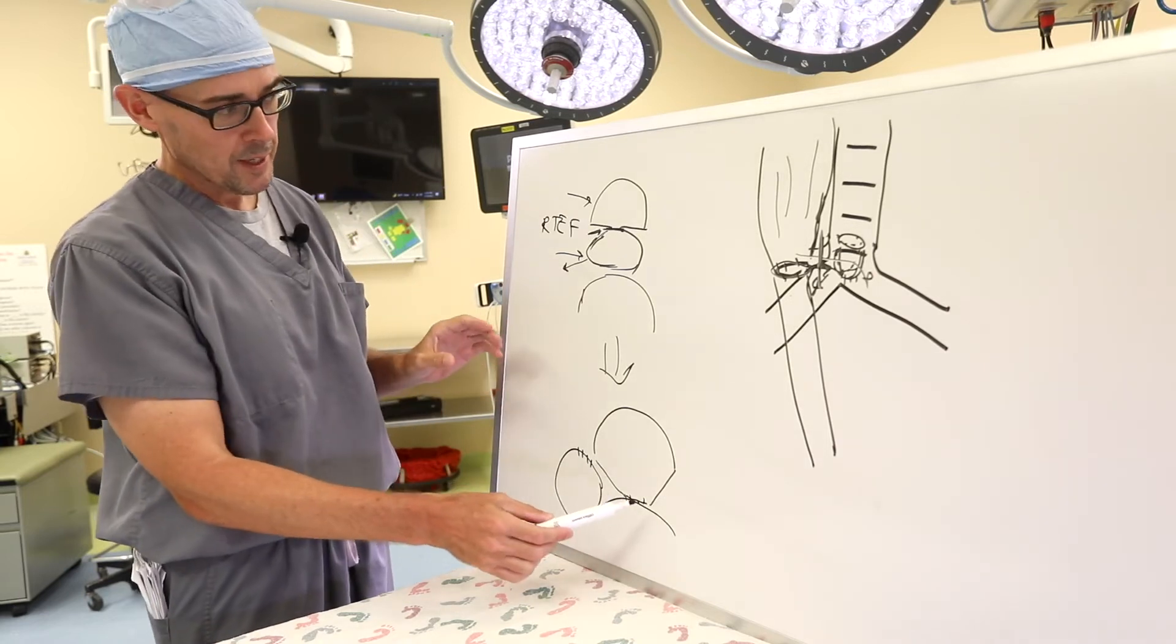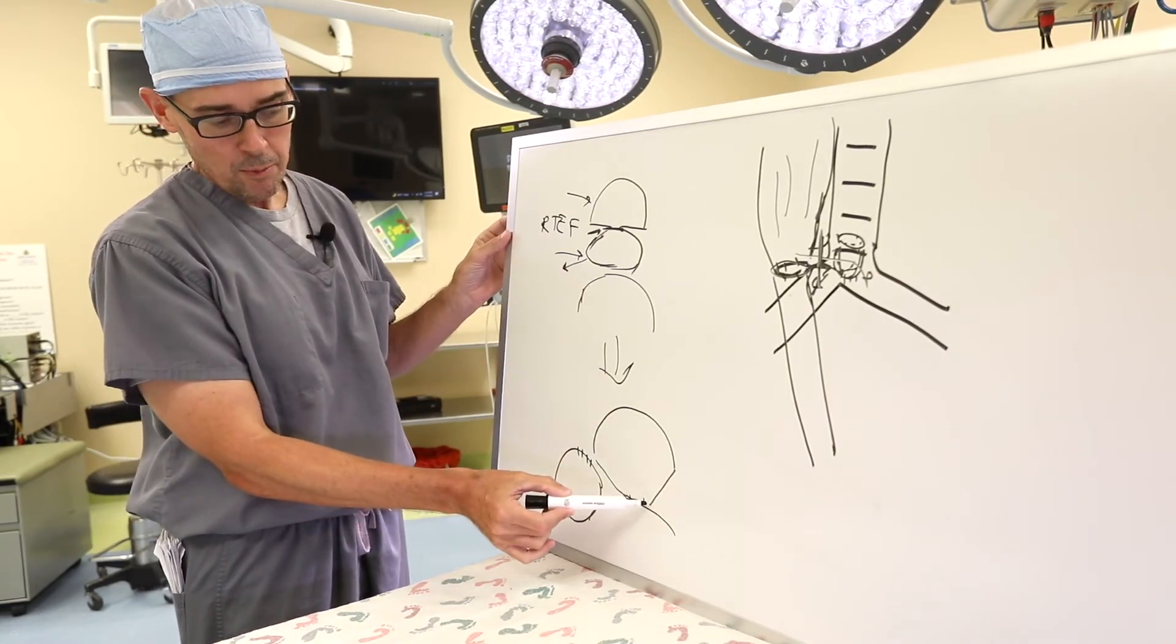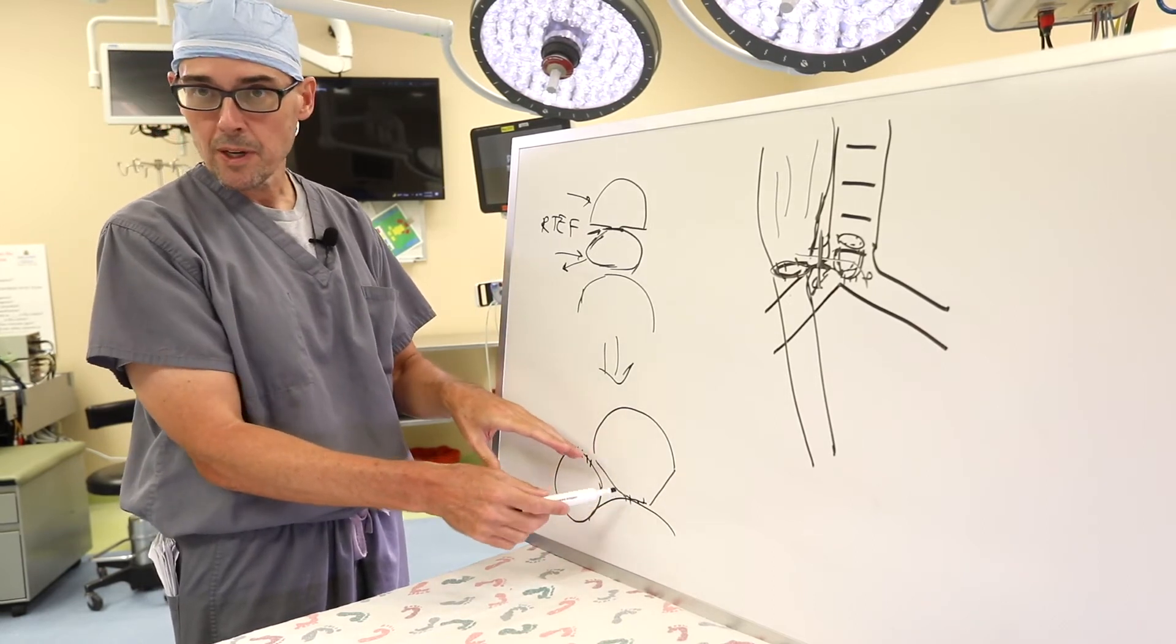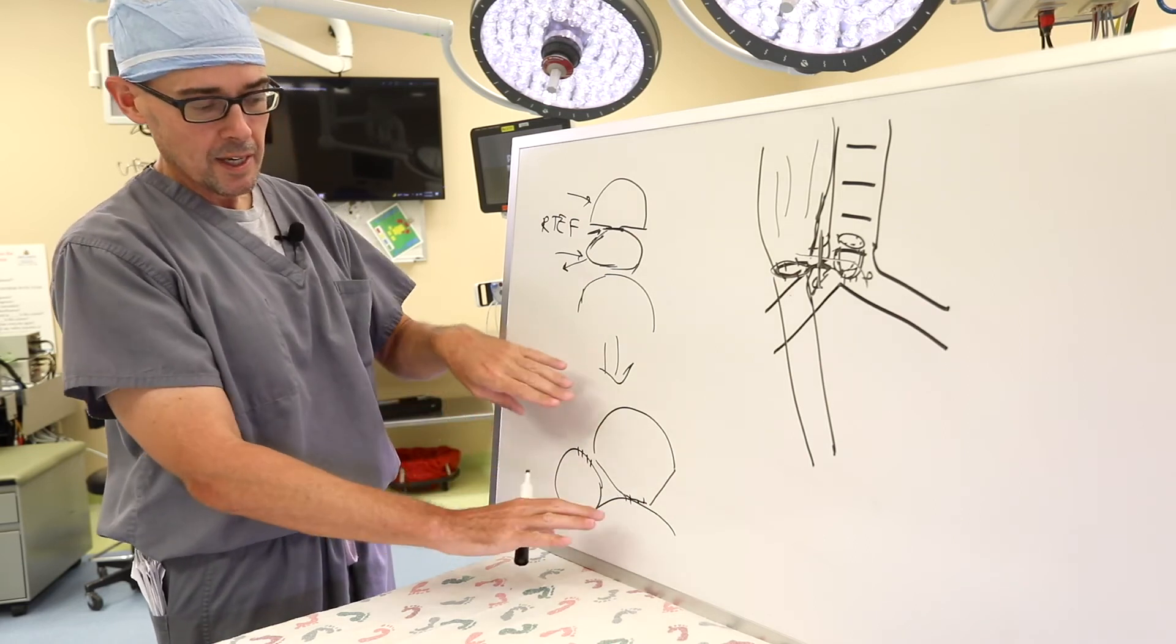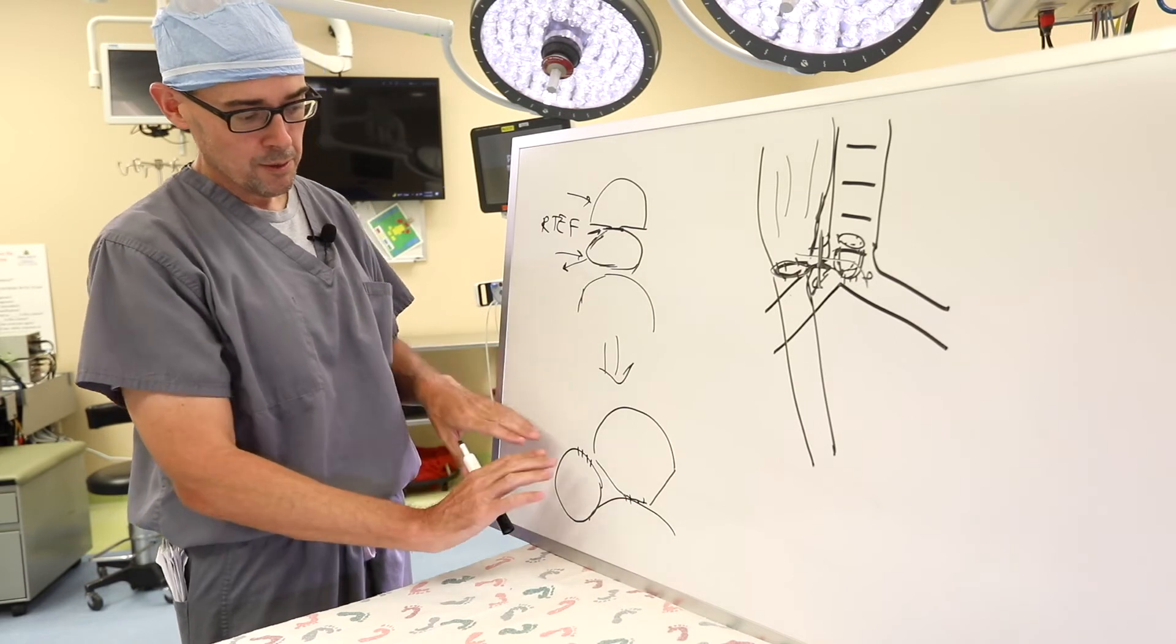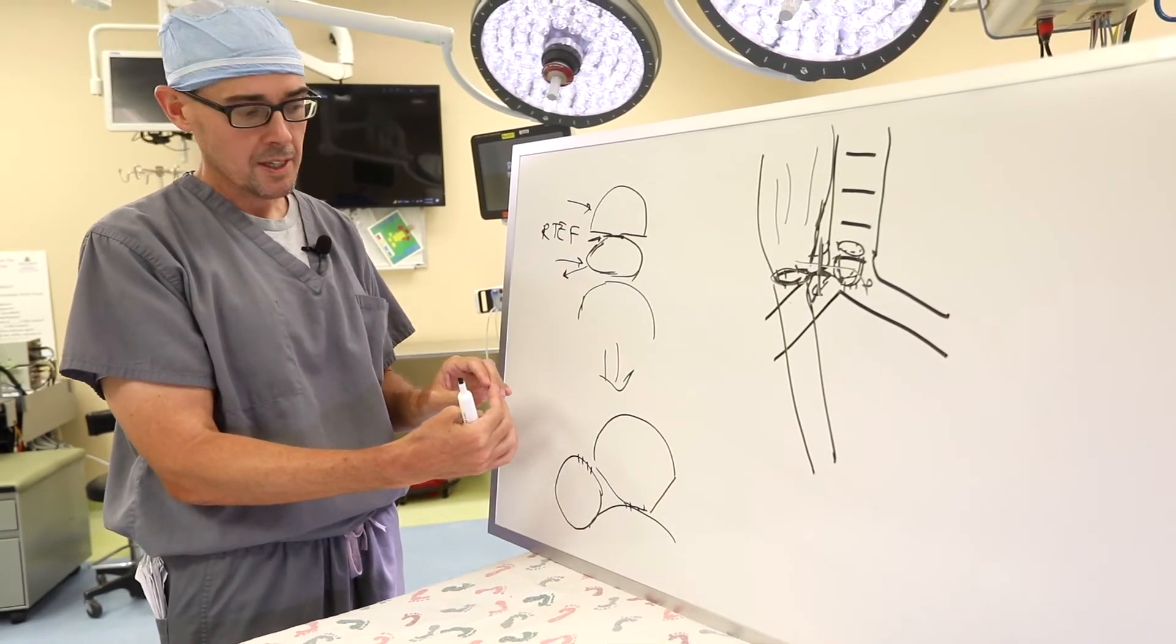So now we have separated the TEF and by suturing the trachea to the spine, a procedure called a posterior tracheopexy. That basically hides that tracheal suture line closure so that the two can't reconnect into another fistula again.